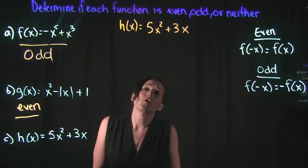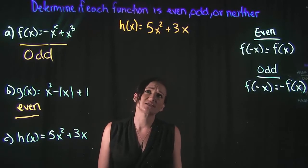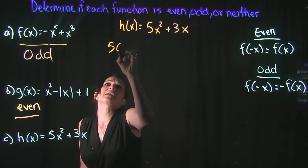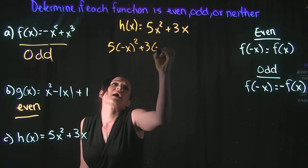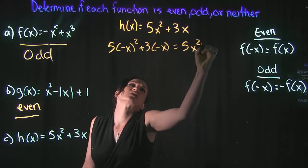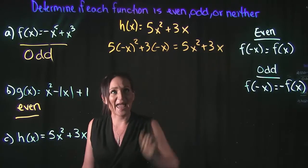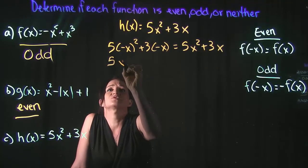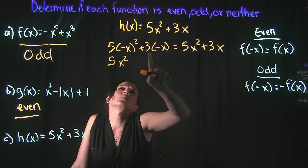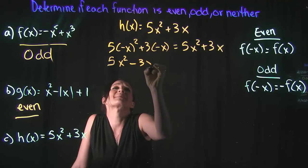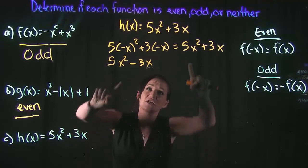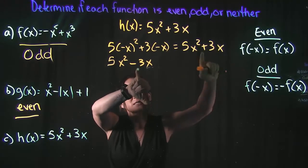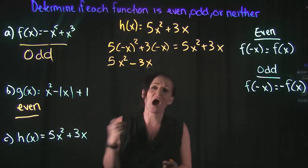For our last example, h of x equals 5x squared plus 3x. Let's test for even by plugging in negative x. Negative x squared becomes positive x squared, giving us 5x squared. But 3 times negative x gives us minus 3x. So we have 5x squared minus 3x, but the original is 5x squared plus 3x. The 3x terms don't match, so it is not an even function.